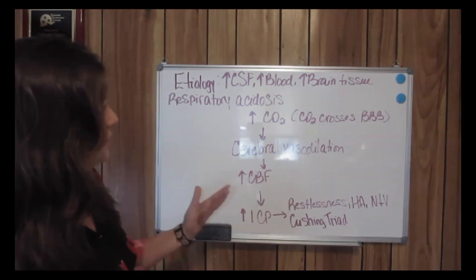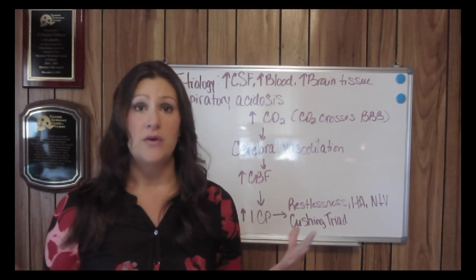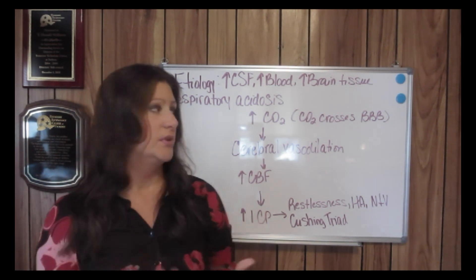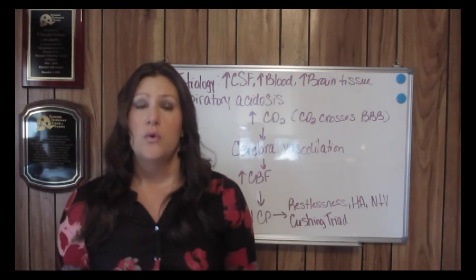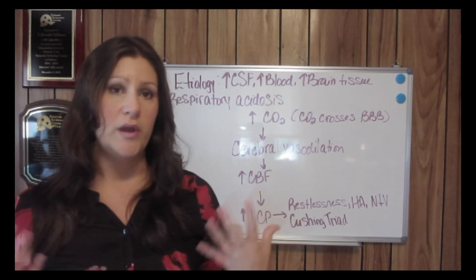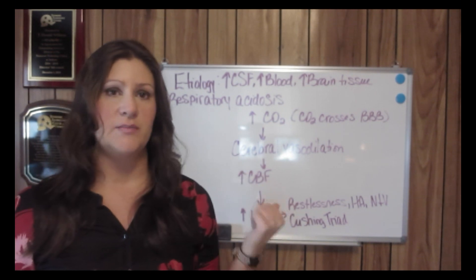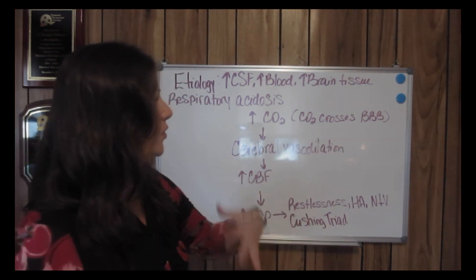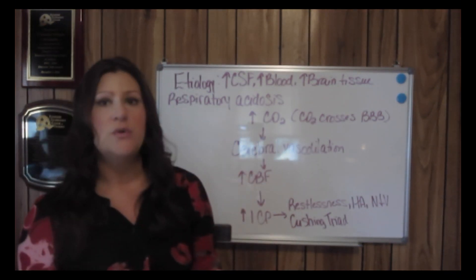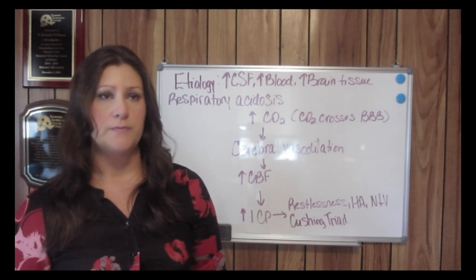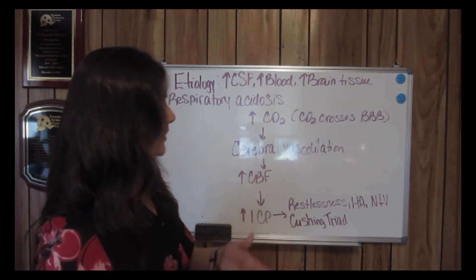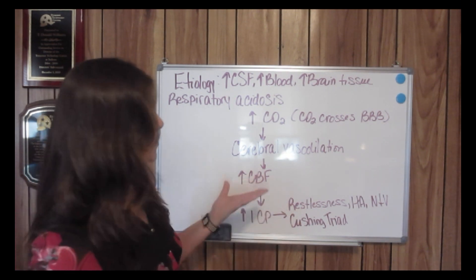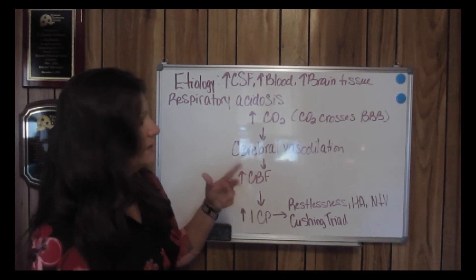With respiratory acidosis, there is an increased amount of CO2 within the body. CO2 readily crosses the blood-brain barrier. CO2 is a very potent vasodilator, and when it crosses the blood-brain barrier, it will lead to massive vasodilation.